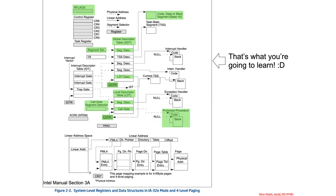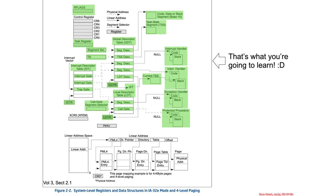But I think this is the more interesting point. This is our giant table of everything we're going to learn. This is what it looked like after our previous segmentation section, and this is what it looks like now after the interrupt section. Between segmentation and interrupts, we've really covered basically all of this stuff. What's left to do is to learn about paging and virtual memory management. So let's move on.